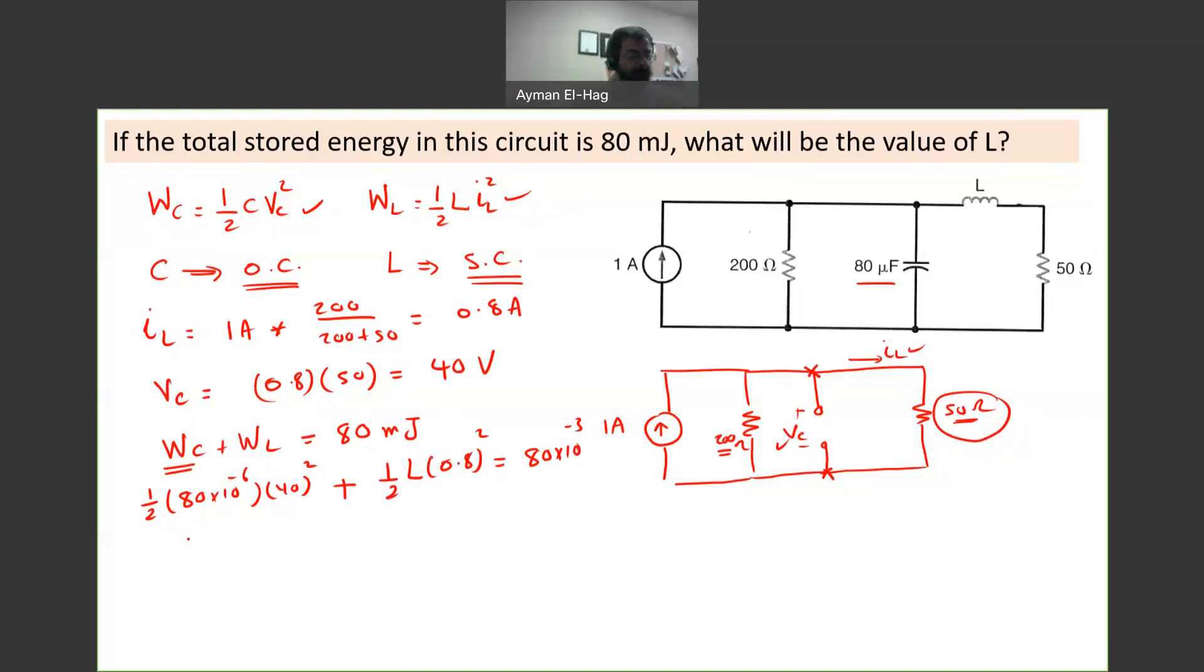So what we will have here, this will become 64 times 10 to the minus 3, plus one half times 0.8 squared, which is 0.32L, is equal to 80 times 10 to the minus 3. Now it becomes very straightforward.